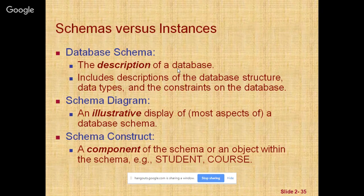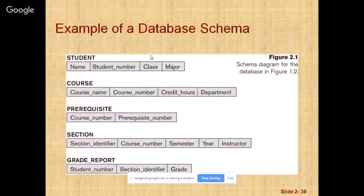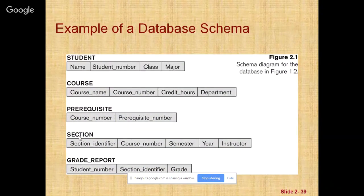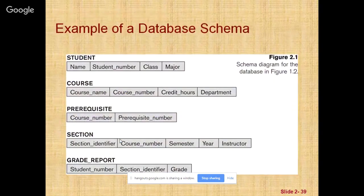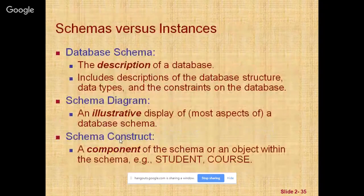A displayed schema is called a schema diagram. You can see a schema diagram here with a student table, course table, prerequisite table, section, and grade report. The diagram displays the structure of each record type but not the actual instances of those records. Each object in the schema — such as student or course — is called a schema construct.